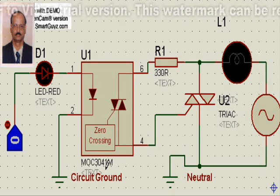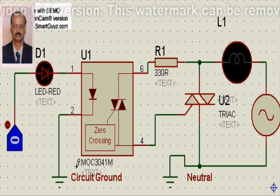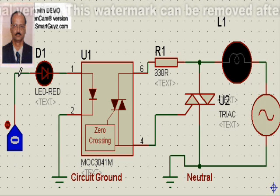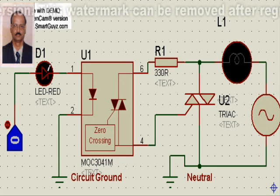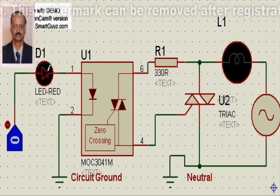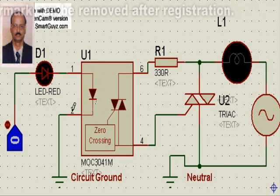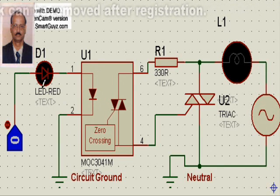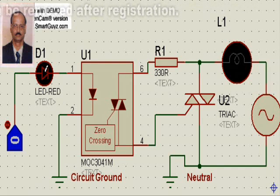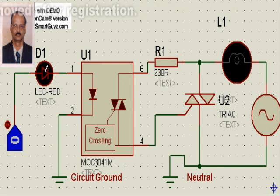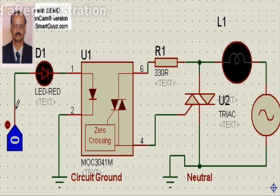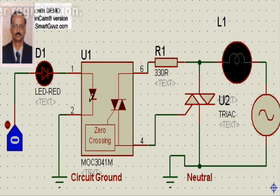From the microcontroller, we have connected one LED in series to understand that when this goes high, the current flows through this route and this LED will glow, indicating that our circuit is working as far as the input to the optocoupler is concerned. This may or may not be used, but it gives a good indication.